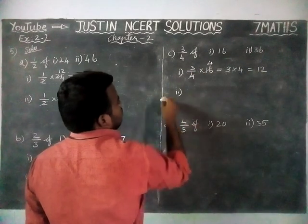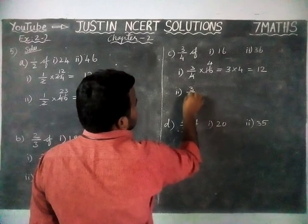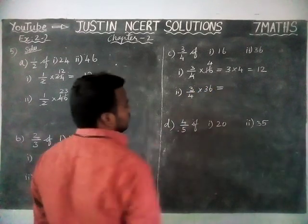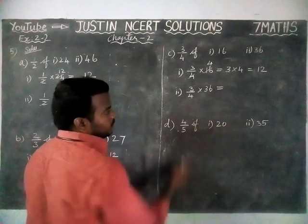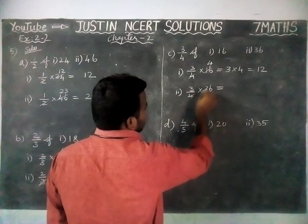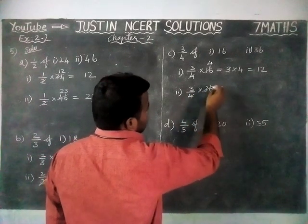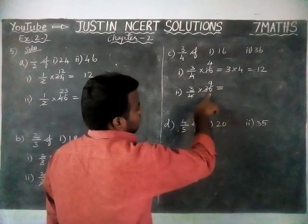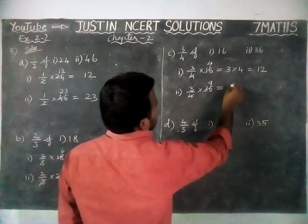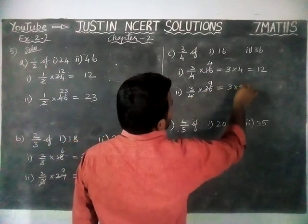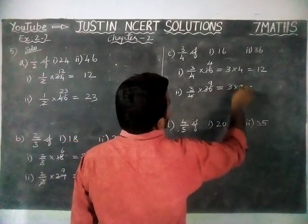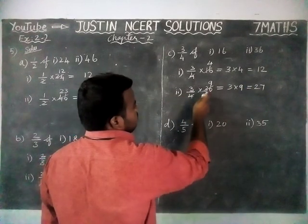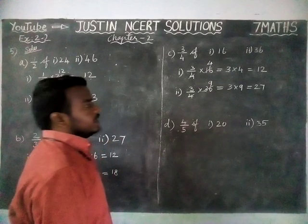Next, second problem: 3 by 4 of 36 is equal to — we can simplify by 4. 4 goes into 36 nine times. Now, 3 into 9: 9 threes are 27. So, 3 by 4 of 36 is equal to 27.